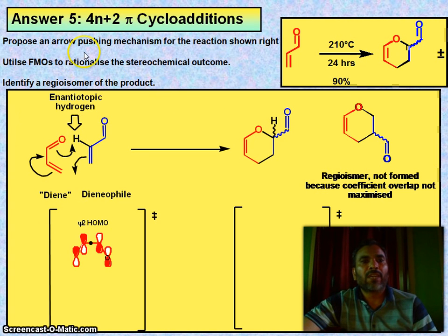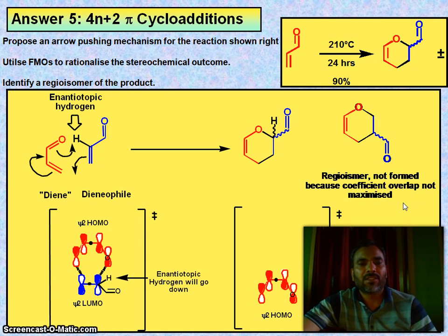Now propose an arrow pushing mechanism for the reaction shown right. Utilize FMO to rationalize the stereochemical outcome. Identify a regioisomer of product, this one. So enantiomers of hydrogens. You have this: one is diene, another dienophile, forming this regioisomer, not formed because coefficient overlap you have not maximized here.